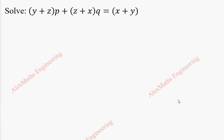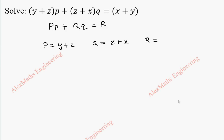Hi students, this is Alex here. In this video, we are going to find the solution for the given partial differential equation. This is of the form capital P into small p plus capital Q into small q equal to capital R. So from this, capital P is y plus z, capital Q is z plus x, and capital R is x plus y.